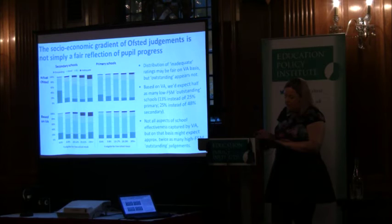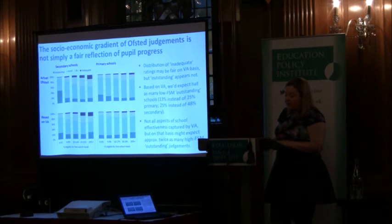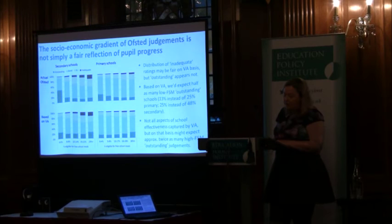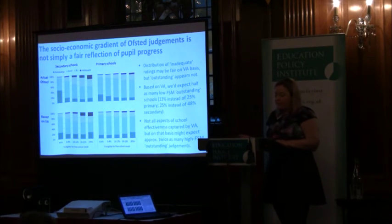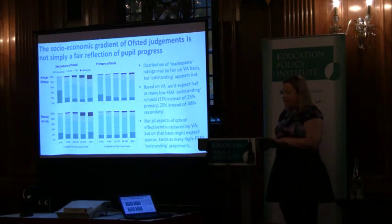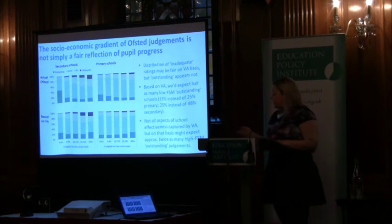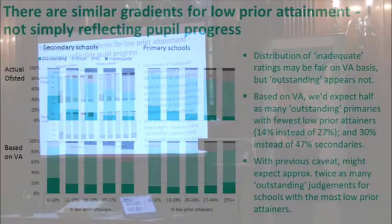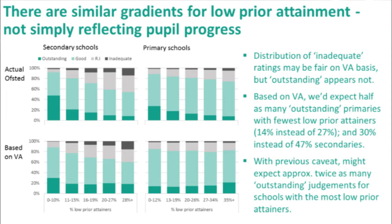In terms of numbers, the value-added distribution suggests there are about 130 too many secondaries and 382 too many primaries in the lowest FSM band rated outstanding, and with the caveats about unobserved factors, that we're missing about 50 secondaries and 310 primaries in the outstanding category for the highest FSM schools. The same analysis for schools by proportion of low prior attainers shows a very similar pattern to the FSM analysis, so we won't labour those points and will move on to the implications.